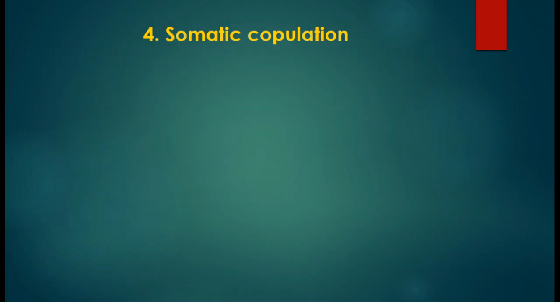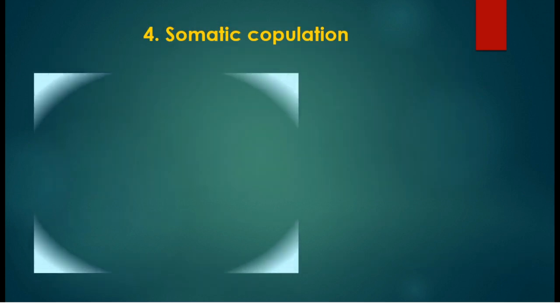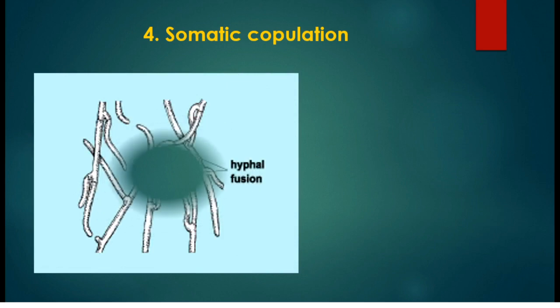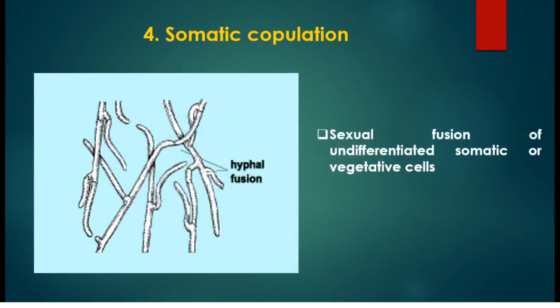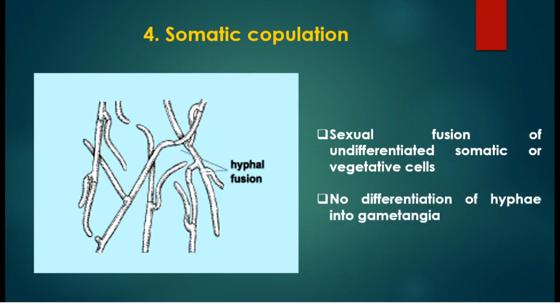The fourth method is somatic copulation. In somatic copulation, the sexual fusion of undifferentiated somatic or vegetative cells takes place and produces the sexual spores. The fungal hyphae are not differentiated into special gametangial structures.